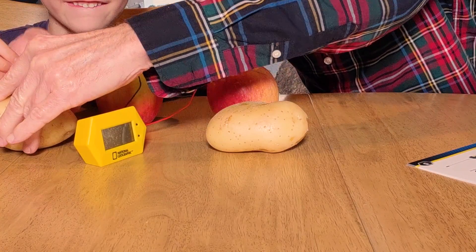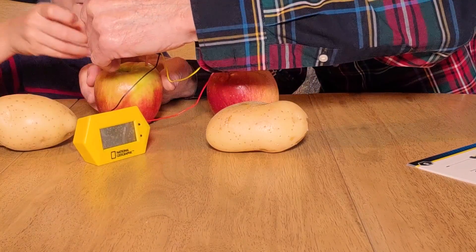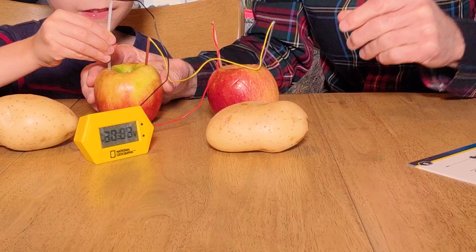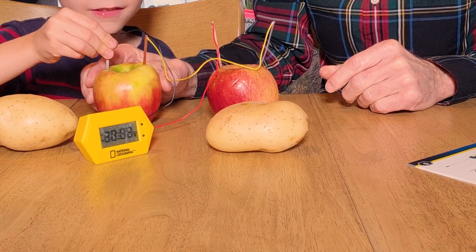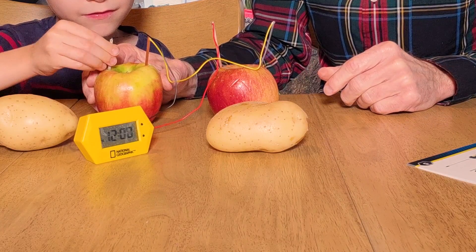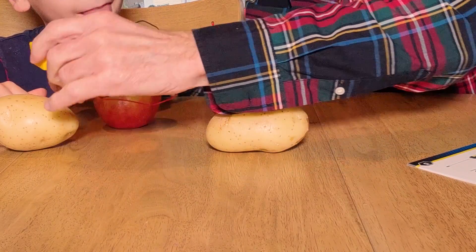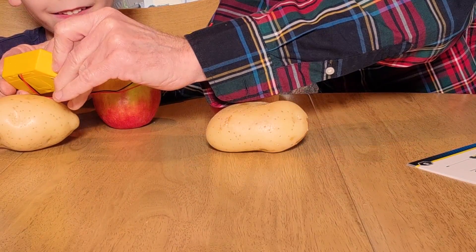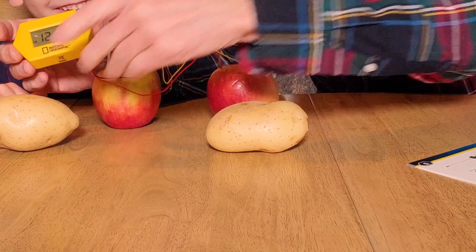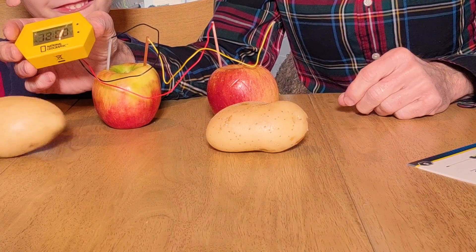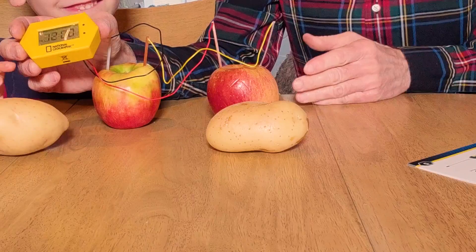Now we'll take these out of the potato, put the copper electrode in the apple just like we did in the potato. Good, perfect. Now we'll pull this one out of the potato, put it in there. Let's see. Now what's happening? I see 12 o'clock! There's electricity flowing from the apple.